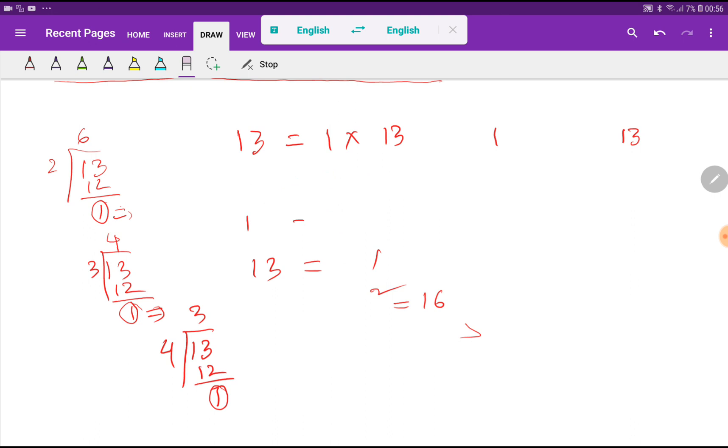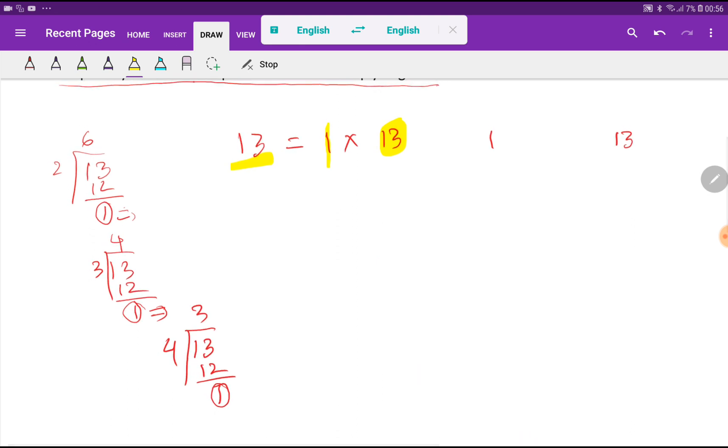So basically, we are getting 2 factors for 13. The first one is 1 and the second one is 13. Actually, 13 is a prime number, so every prime number will have just 2 factors.